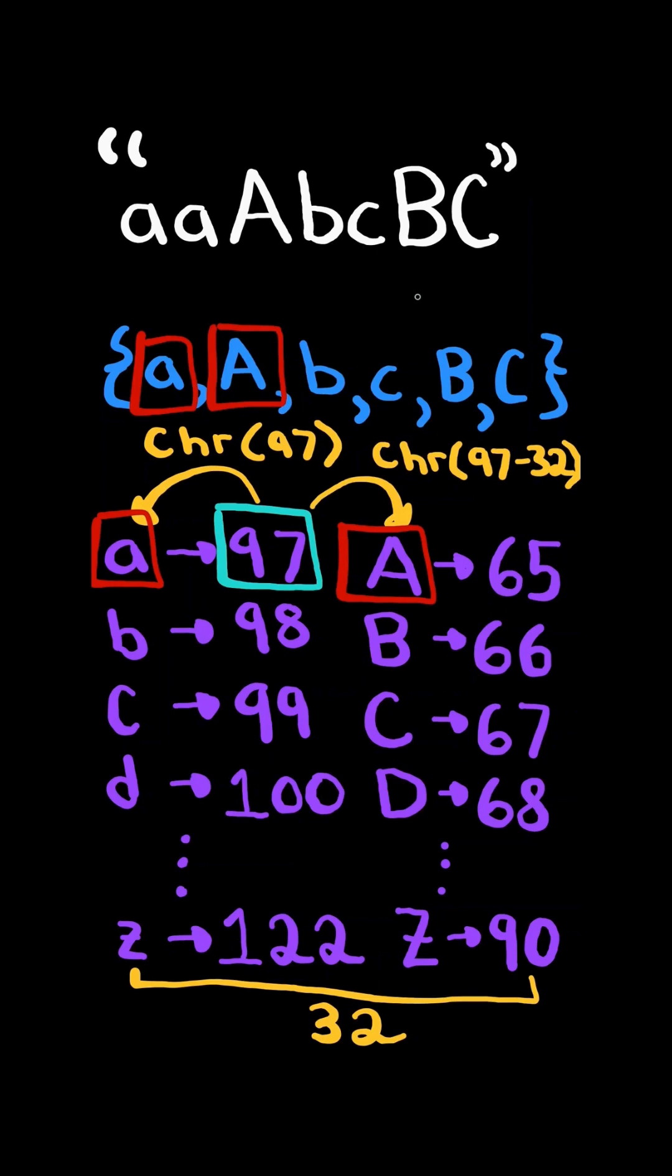Now we check if both the upper and lower exist in the set, and if so, we increment a counter by 1.